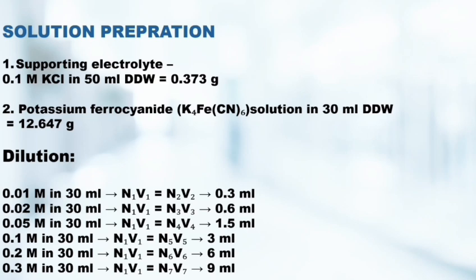Now let us move to the solution preparation. For solution preparation we need to make the supporting electrolyte, that is 0.1 molar KCl in 50 ml double distilled water. Secondly, the potassium ferrocyanide solution in 30 ml double distilled water. From the standard solution we have to make dilutions.